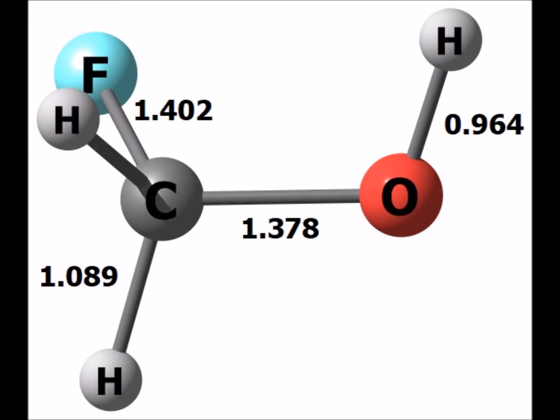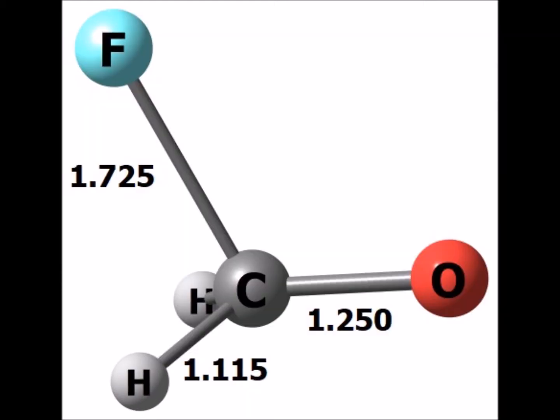Suppose we replace one of the hydrogen atoms attached to carbon in methanol with a very electronegative element, such as fluorine. In the process, we get fluoromethanol, with the structure shown here. Fluoromethanol has acidic properties, and in the process of acting like an acid, it loses a proton H+ to form the fluoromethoxide ion, with the computed structure shown here.